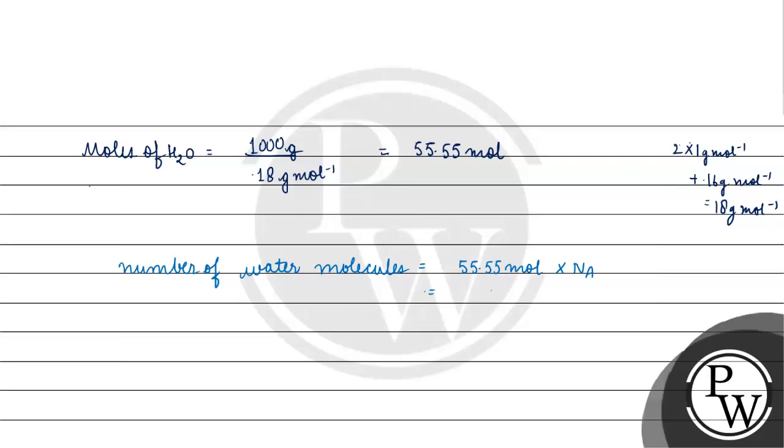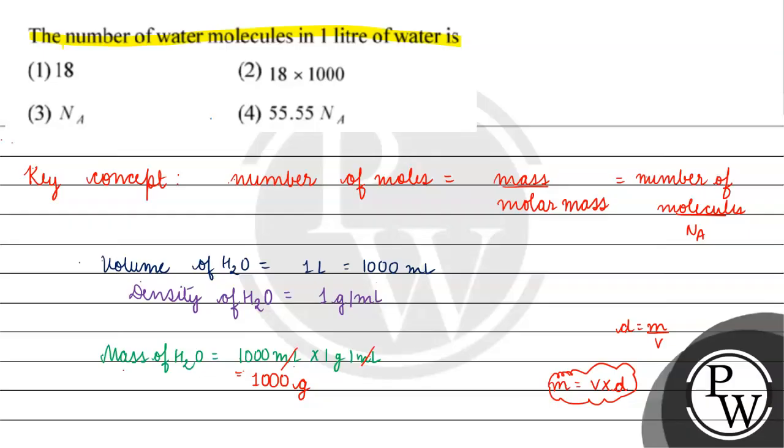What will we have? We have 55.55 into Avogadro's number. The correct answer for this question will be option 4. I hope you understood it well. Thank you and all the best.